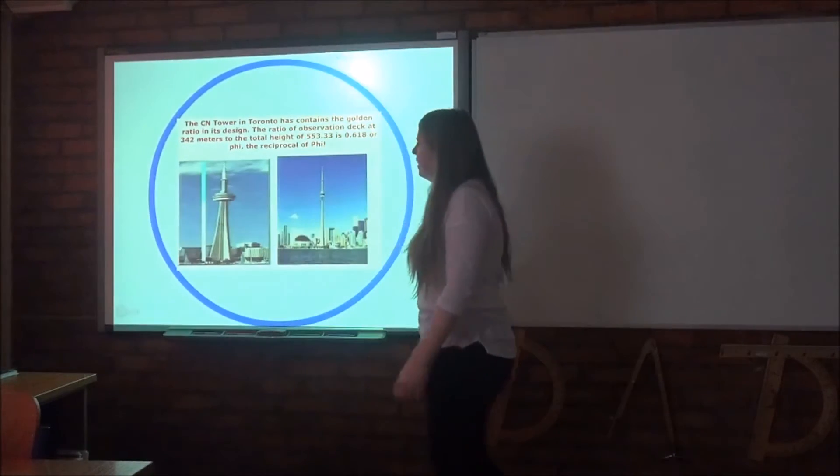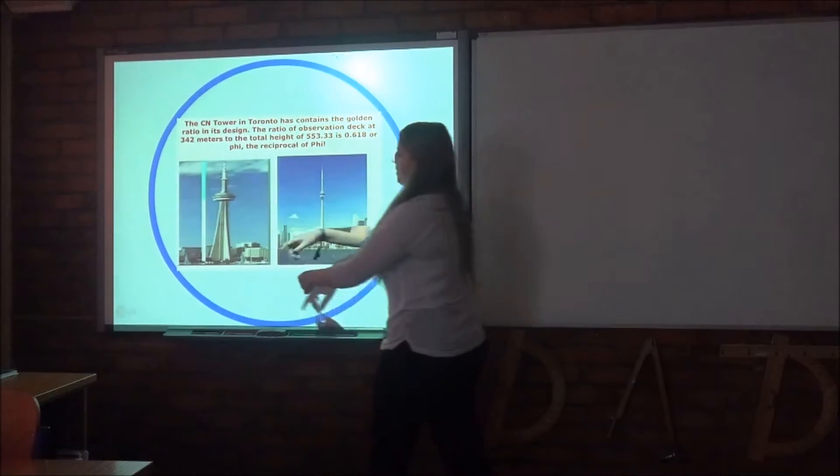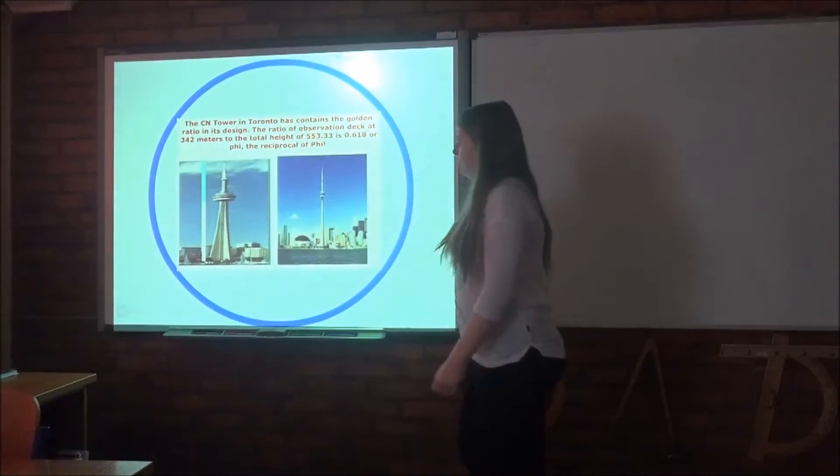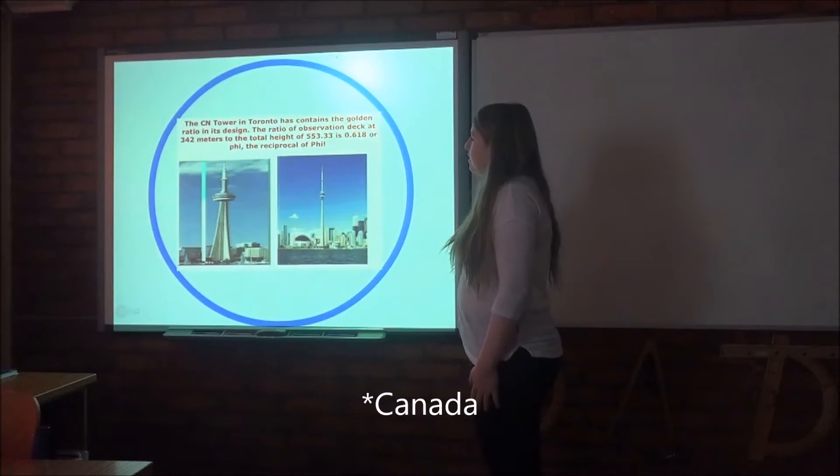And the last one is the CN Tower in Toronto. And it's also the bigger part, the smaller. So, as I said in USA, almost everywhere you can see the golden ratio.